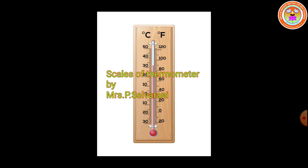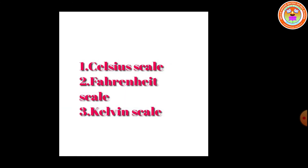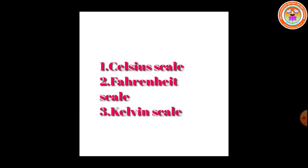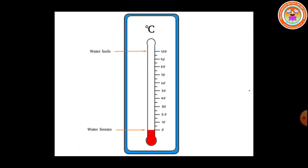We have three important scales to measure the temperature: Celsius scale, Fahrenheit scale, and Kelvin scale. Let me explain about Celsius scale briefly. The picture shows a Celsius scale. Celsius is the common unit of measuring temperature, termed after Swedish astronomer Anders Celsius in 1742. Before that it was known as centigrade, as thermometers using this scale are calibrated from the freezing point of water, which starts from 0 degree Celsius.